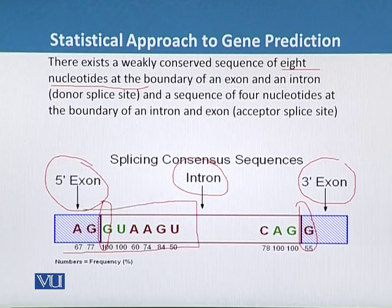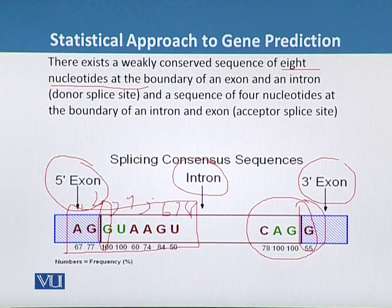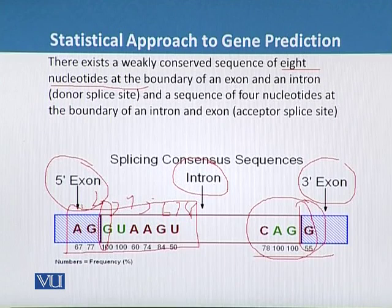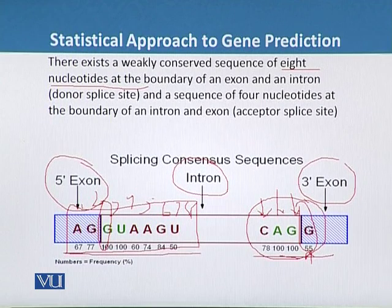At the donor splice site we have a total of eight nucleotides, and at the acceptor splice site we have conserved nucleotides that are only four in number. Below the nucleotides their frequencies are also mentioned — for example, cytosine (C) has a frequency of 78%, and adenine (A) and guanine (G), written in green, both have 100% frequency.